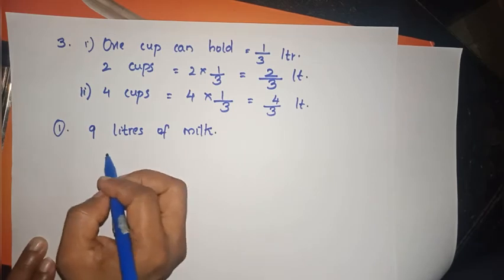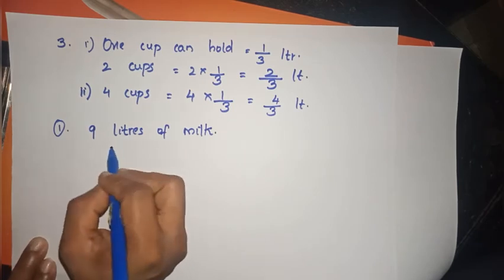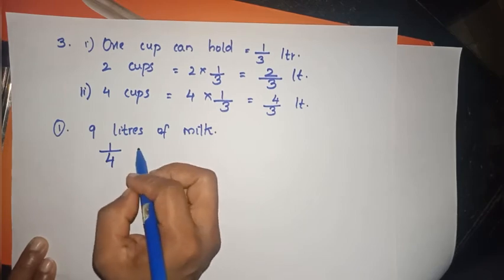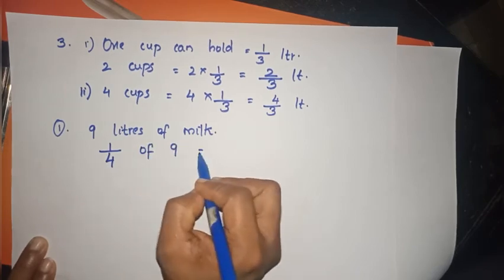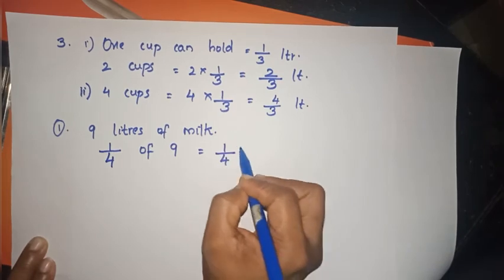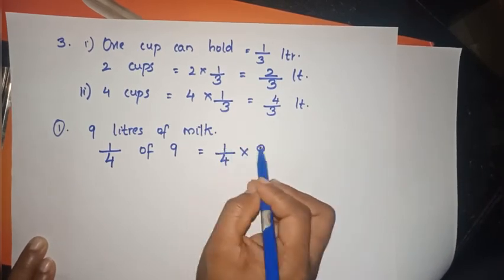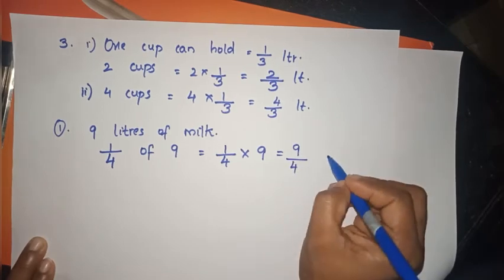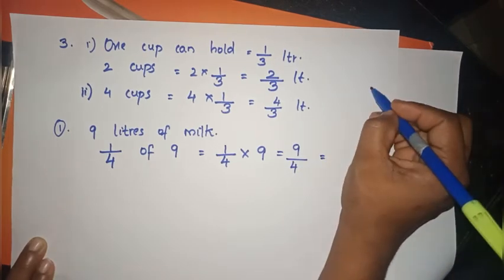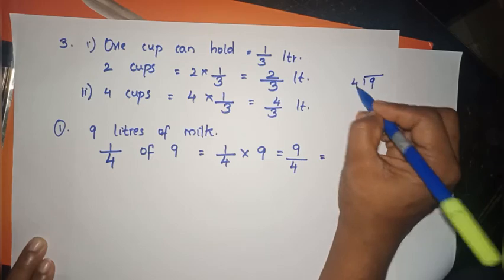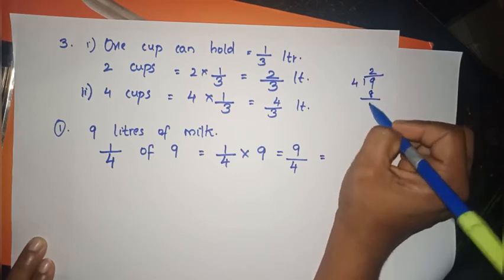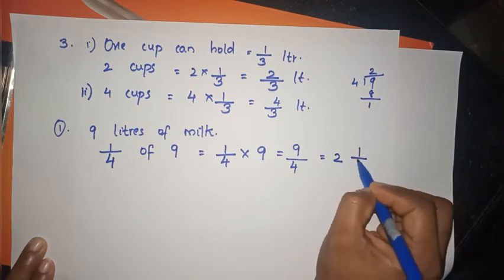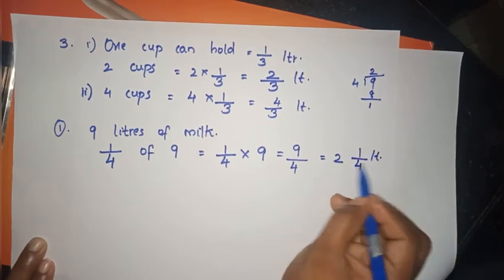We have 4 kids, so we divide into 4 parts. We calculate 1/4 of 9, which is 1/4 into 9, equal to 9/4. Dividing: 4 goes into 9 giving us approximately 2 liters each.